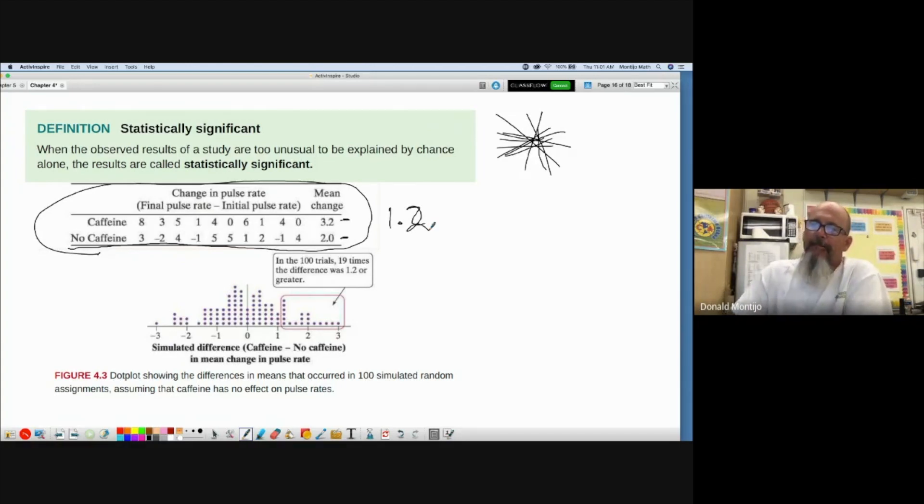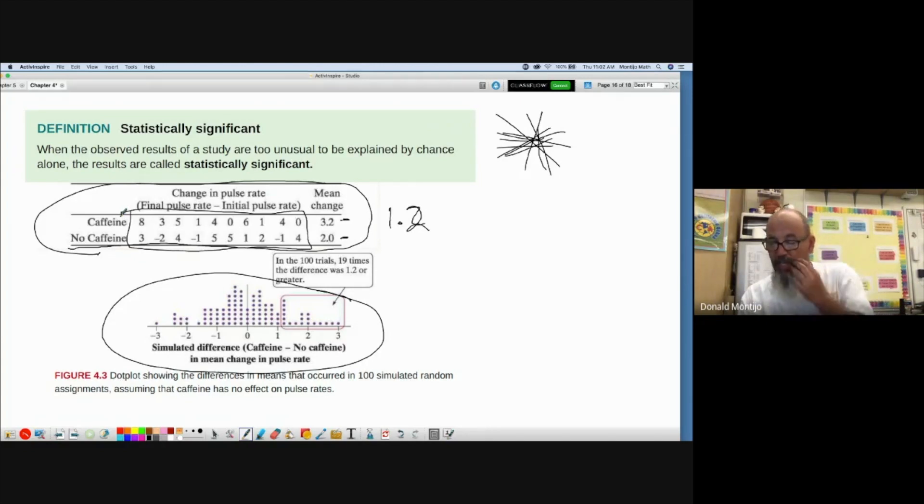So what we did was simulate this in this dot plot. We took these 20 values and wrote them on index cards. Then we randomly selected 10 and calculated the difference. We had 20 index cards. On each card we wrote one of these values, the mean change. We shuffled the cards into two piles of 10 cards each.